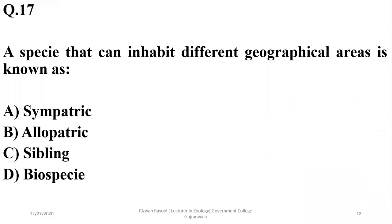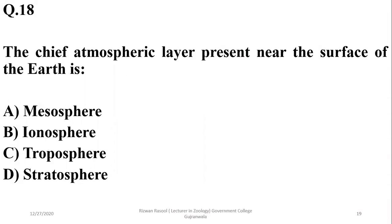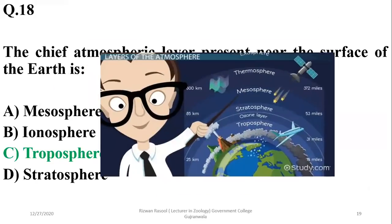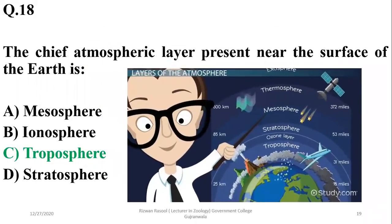Question 16: A species that can inhabit different geographical areas is known as allopatric — beta is the answer. Question 17: The chief atmospheric layer present near the surface of earth is the troposphere, followed by the stratosphere, mesosphere, thermosphere, and exosphere. Charlie is the best option.